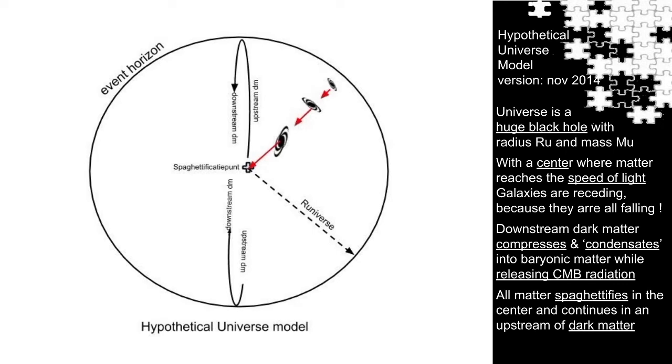Here I hypothesize that matter spaghettifies in the center and spaghettification, perhaps you know it, is a scientific explanation for vertical stretching and horizontal compressing in very strong non-homogeneous gravity fields. Matter will stretch into spaghettified strands, as they say.